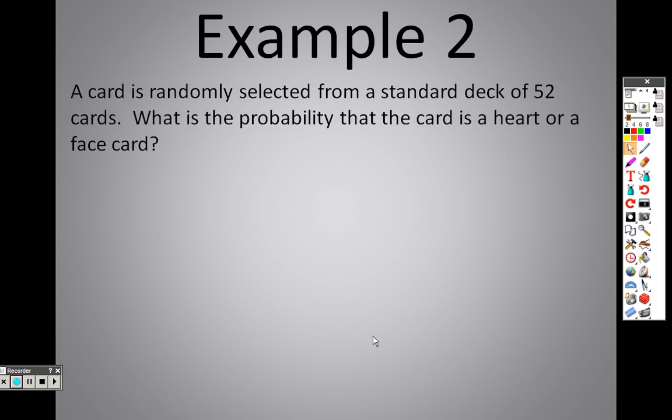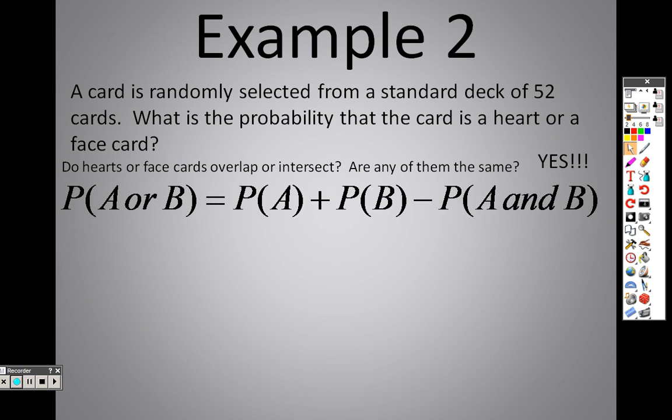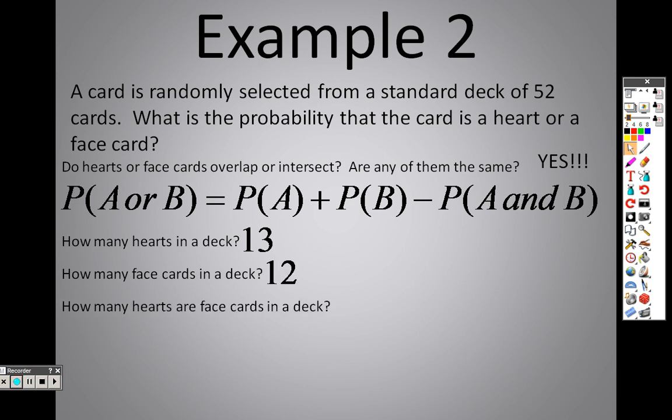In example 2, a card is randomly selected from a deck of 52 cards. What's the probability that the card is a heart or a face card? So let's take a look here. How many hearts are in a deck? There are 13 out of 52. How many face cards are there? There's 12. So what we need to now look at is, are there any hearts that are face cards? Because if so, we've got to take them out because we're double counting them. And the correct answer is yes, there are.